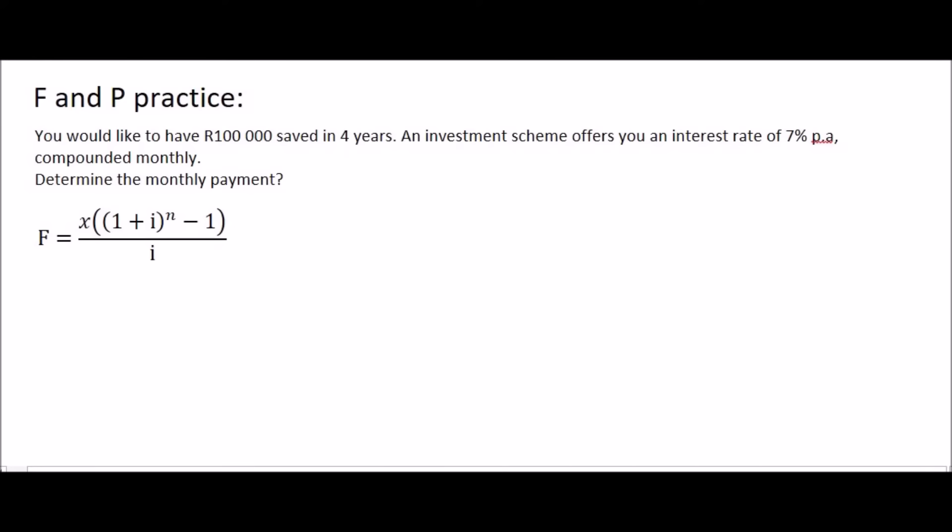Now it's just a matter of plugging the various numbers in. So the 100,000 Rand, that is the future value, so that will go in the place of F. X is the monthly payment. We don't know what that is, so we'll just leave that alone. The interest is 7%, which is 0.07, but it's compounded monthly, so we'll have to put it over 12. N is the number of payments that you make. Well, you're going to be saving for 4 years, and each year you're going to make 12 payments. So we could say 12 times 4. Then we'd say minus 1, and then at the bottom we say 0.07 over 12.